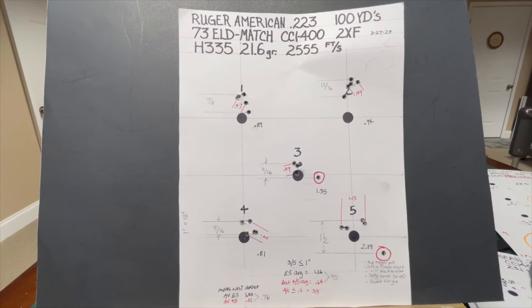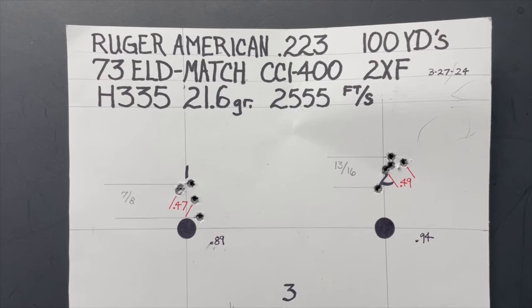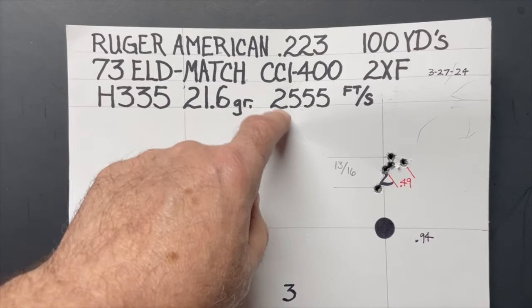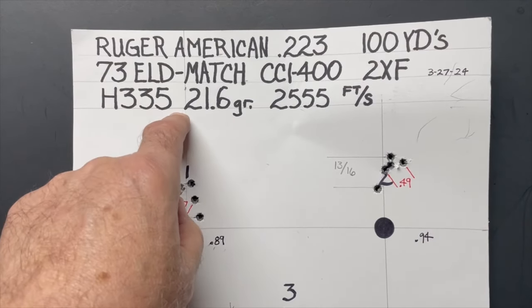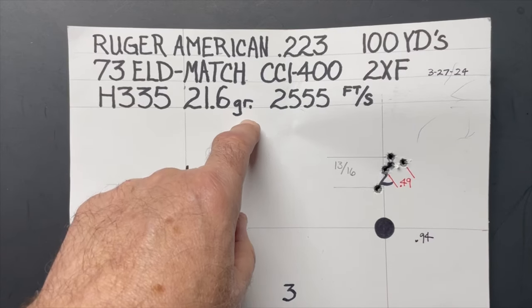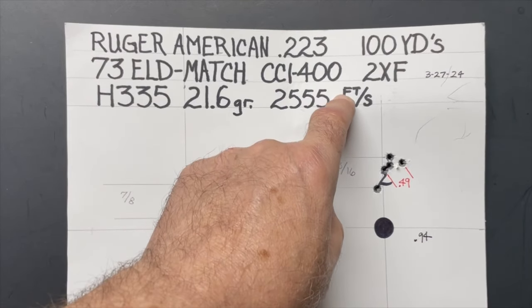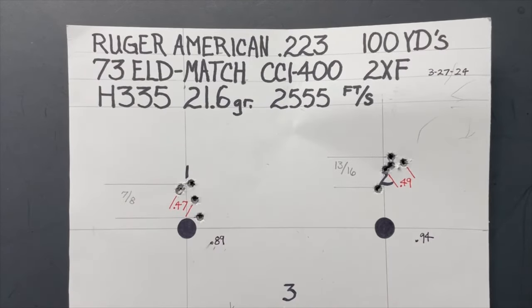Here are my results from the range today. So once again, I loaded 25 rounds of 73 grain ELD match bullet with H335 powder at 21.6 grains with CCI 400 primers. And I went back out to the range. And these were dispensed with the Hornady Auto Charge Pro. So here we go. These were all at the same charge weight.